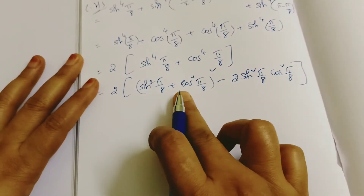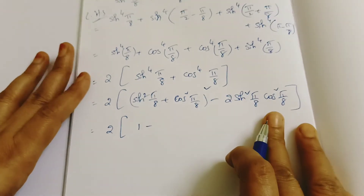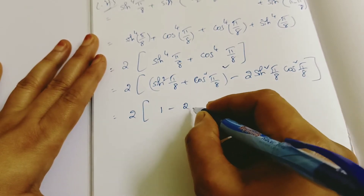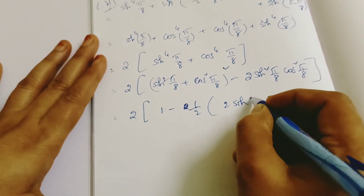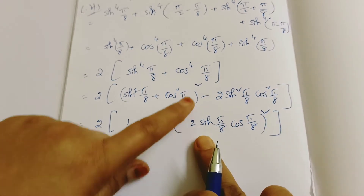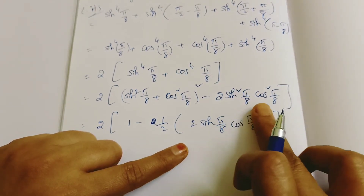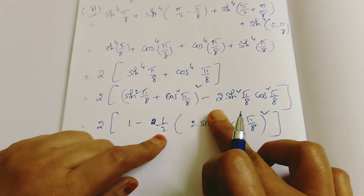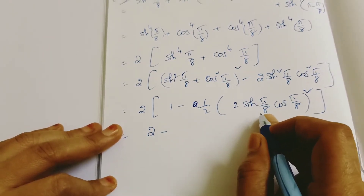Since sin²(π/8) + cos²(π/8) = 1, this becomes 1² − 2·sin²(π/8)·cos²(π/8). Now I convert: multiplying and dividing by 2, I get 1 − (1/2)·[2·sin(π/8)·cos(π/8)]². Since 2 sin A cos A = sin 2A, this becomes 1 − (1/2)·sin²(2·π/8) = 1 − (1/2)·sin²(π/4).